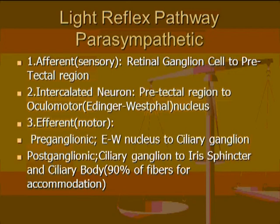The afferent system, meaning towards the brain, begins with the retinal ganglion cell heading to the pre-tectal nucleus. The intercalated neuron goes from the pre-tectal region to the Edinger-Westphal complex, and then you get the efferent, or motor, part going from the Edinger-Westphal complex to the ciliary ganglion. At the ciliary ganglion, fibers are sent to the circular muscle for the iris to constrict, but also to the ciliary muscle to cause accommodation.